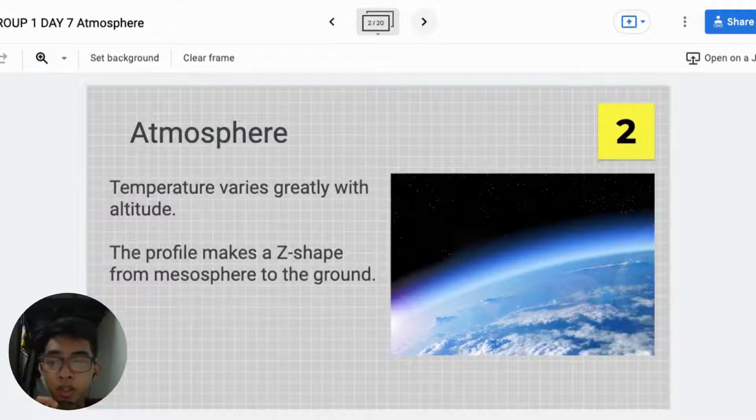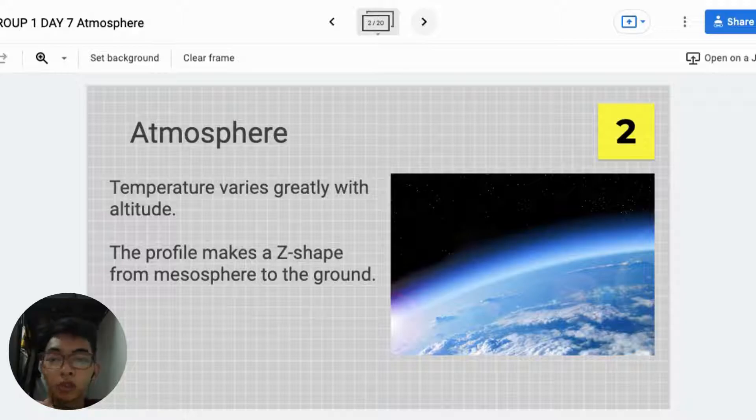Atmosphere. Temperature varies greatly with altitude. The profile makes a Z-shape from mesosphere to the ground.